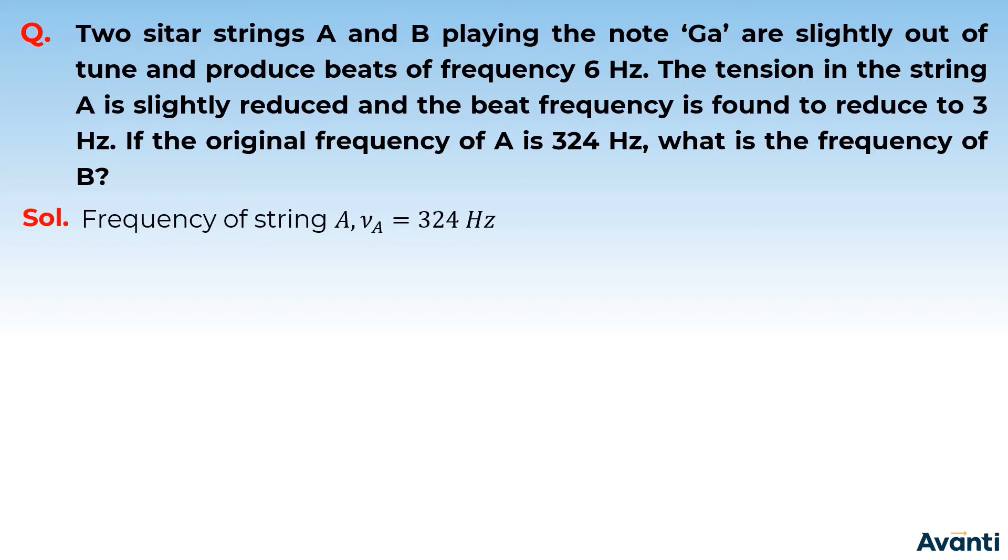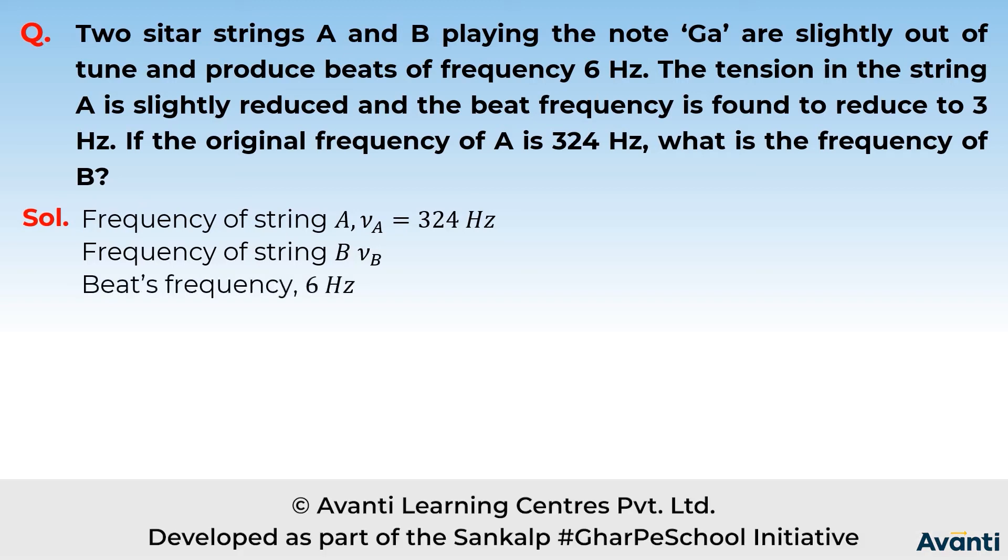The frequency of string A is 324 Hz. We need to find the frequency of string B, which we'll denote as νB. The beat frequency was 6 Hz.